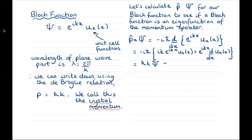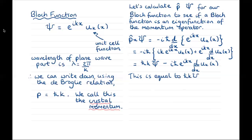This equals h-bar k times psi plus an additional term involving e to the ikx times d by dx of u sub k of x. In general, this is not equal to a constant times psi. So psi is in general not an eigenfunction of the momentum operator. It equals h-bar k times psi only if the derivative with respect to x of the unit cell function is equal to zero, which in general is not the case.